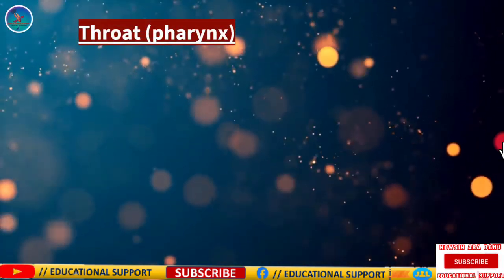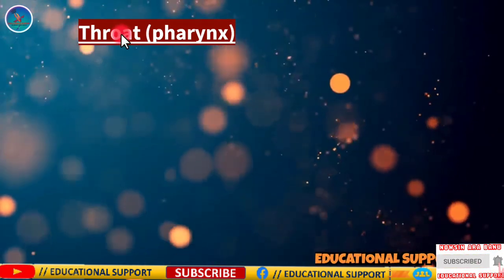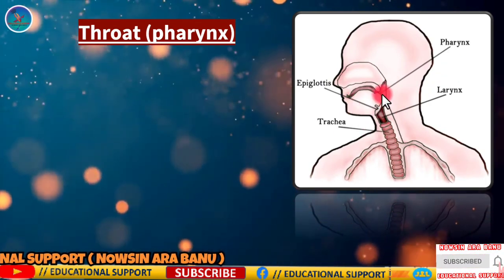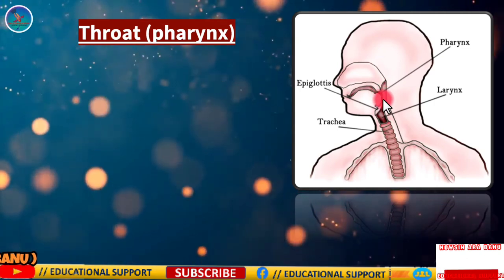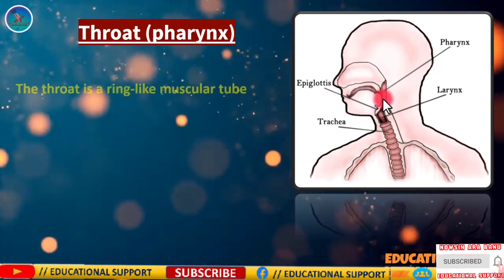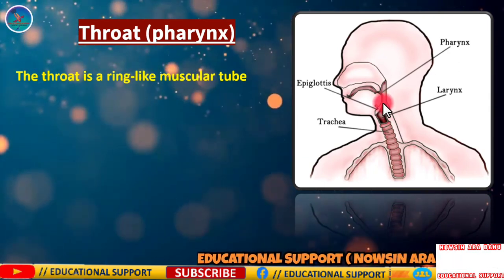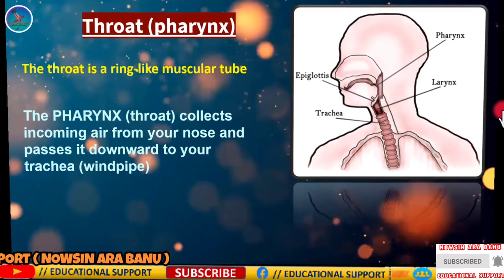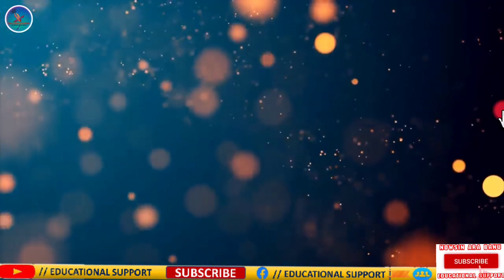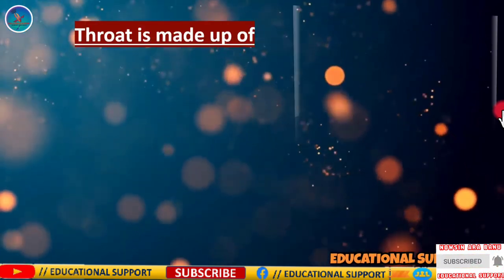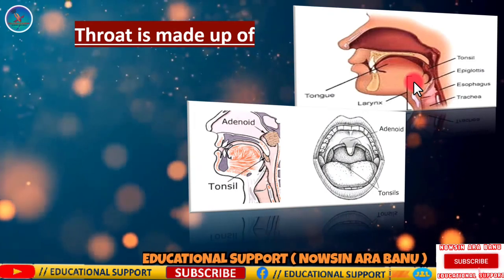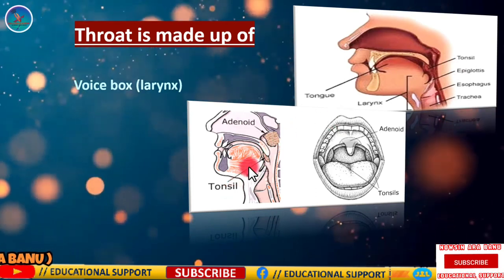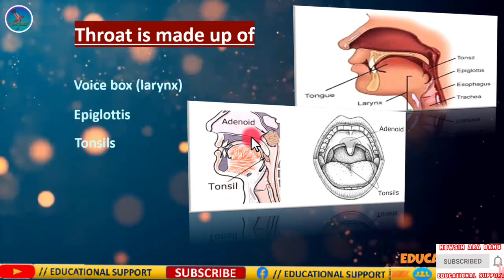The throat or pharynx is a ring-like muscular tube. It is the passageway for air, food, and liquid, and it also helps in forming speech. The throat is made up of the voice box, larynx, epiglottis, tonsils, and adenoids.